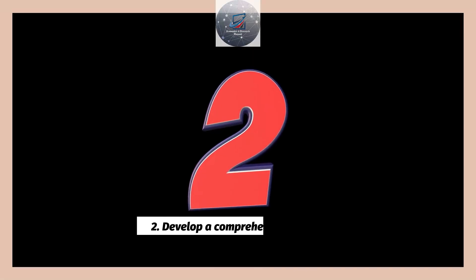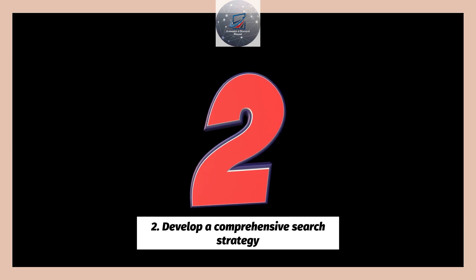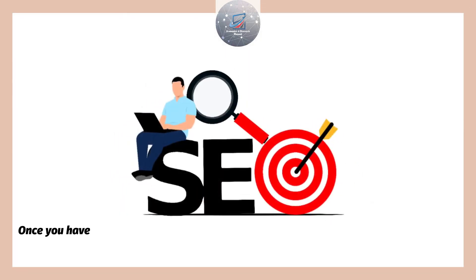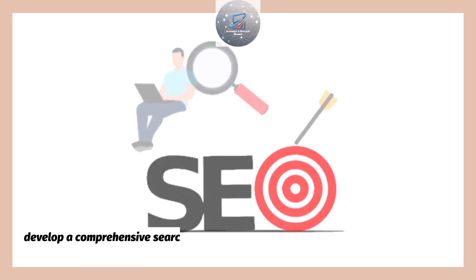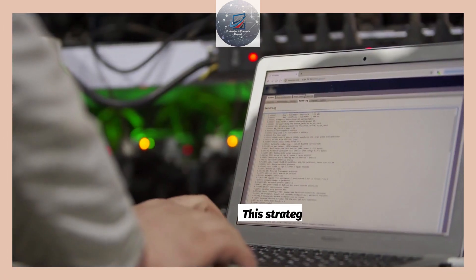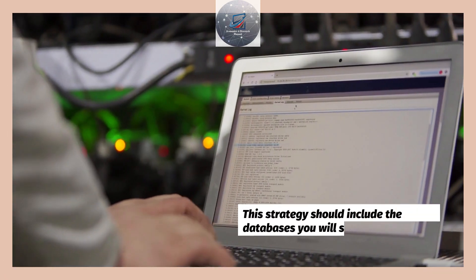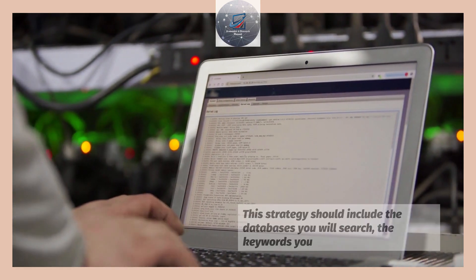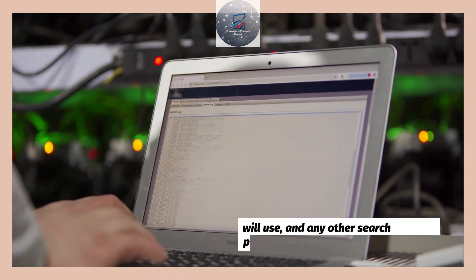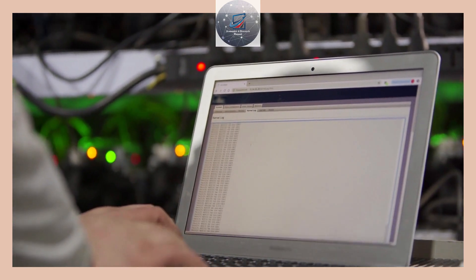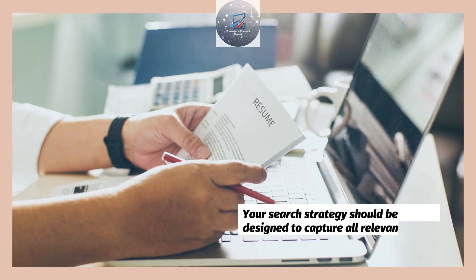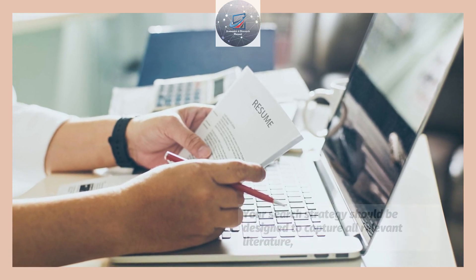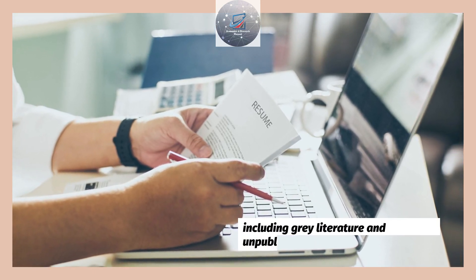2. Develop a comprehensive search strategy. Once you have defined your research question and inclusion criteria, you need to develop a comprehensive search strategy. This strategy should include the databases you will search, the keywords you will use, and any other search parameters you will employ. Your search strategy should be designed to capture all relevant literature, including grey literature and unpublished research.